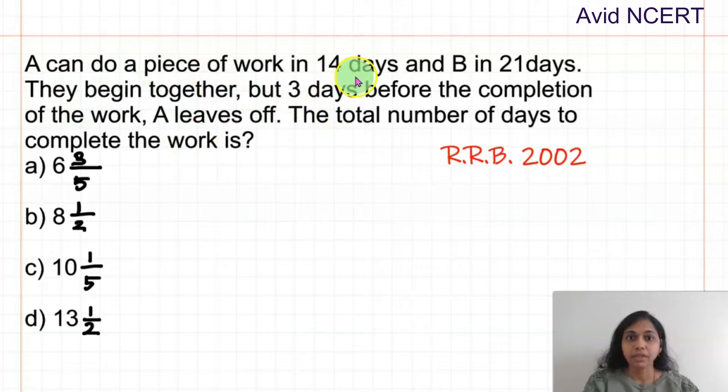A can do a piece of work in 14 days and B in 21 days. They begin working together but 3 days before the completion of the work A leaves out. So the total number of days to complete the work is question mark.